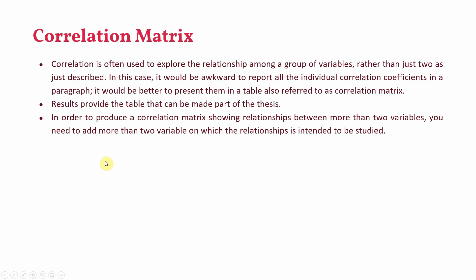We are normally interested in testing relationships between more than two variables. So if there are more than two variables — more than one pair — the results are presented in the form of a correlation matrix. Now, how do you do this in a statistical package like Blue Sky Statistics?